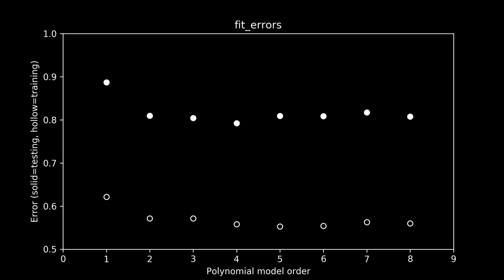The more wiggly the line gets in fifth and higher order polynomial models, the more it captures the quirks of the training data rather than the underlying pattern we're interested in. Based on this train and test approach, we have a clear winner. Of all the models we tried, the fourth order polynomial is best. Congratulations to us. We chose a pretty good model for our data.